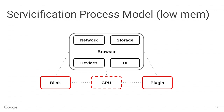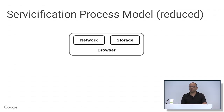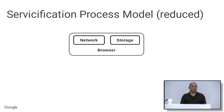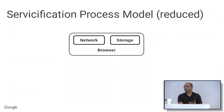Another benefit: you can run just a subset of browser code. For example, if the user closes the browser but there's a pending download, instead of keeping the full browser open — where it could be killed by the system — you can run just the networking and storage code, which is much more likely to run to completion. That's a lot of the flexibility we get from this modular approach.